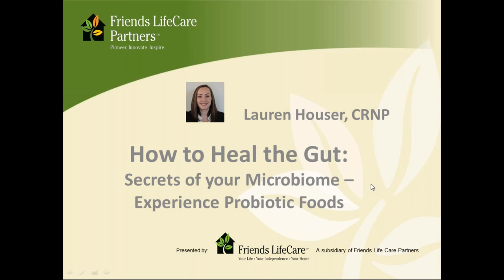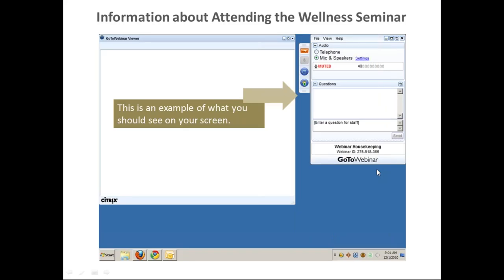Before we get started, I want to provide some housekeeping information. This is your attendee interface — you are listening in on your computer or tablet speaker system by default. If you prefer to join over the phone, select telephone in the audio pane and the dial-in information will be displayed. There is an orange arrow at the very top left of the dialog box. You'll have the opportunity to submit questions and comments during the presentation by typing into the questions pane.